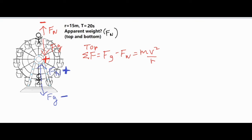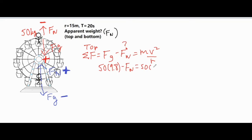Centripetal acceleration is v² over r, so the net force equation is mg − FN = mv²/r. To find the apparent weight — the normal force — we first calculate fg. Let's say our person is 50 kilograms, so fg = 50 × 9.8. We have mass of 50, v² unknown, and radius of 15 meters.